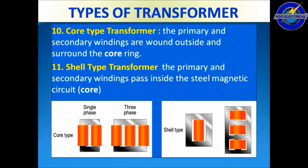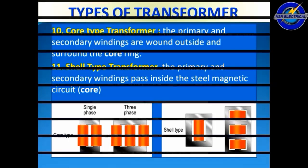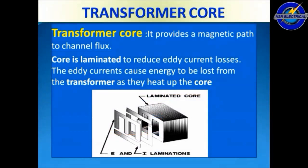Core type transformer: the primary and secondary windings are wound on the outside, surrounding the core ring. Shell type transformer: the primary and secondary windings pass inside the steel magnetic circuit. Here we see the diagram of core type and shell type transformers.